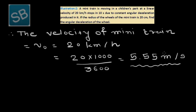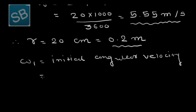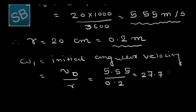This is the actual velocity of the moving train. The radius of the wheels of the mini train, r, is given as 20 centimetres, which equals 0.2 metres. The initial angular velocity ω₁ equals V₀/r = 5.55/0.2 = 27.75 radians per second.